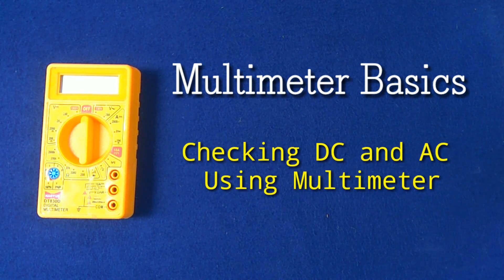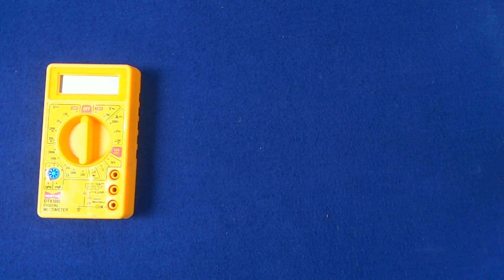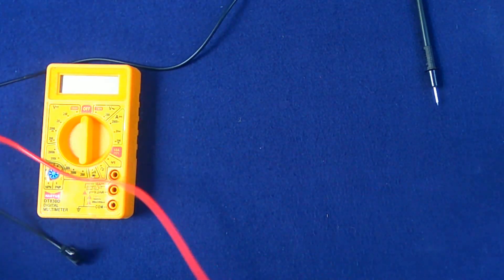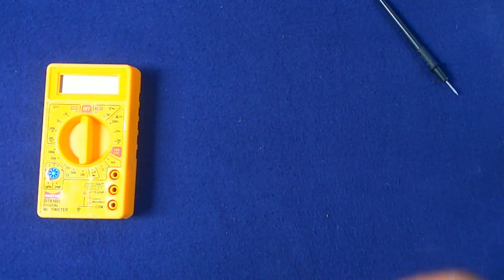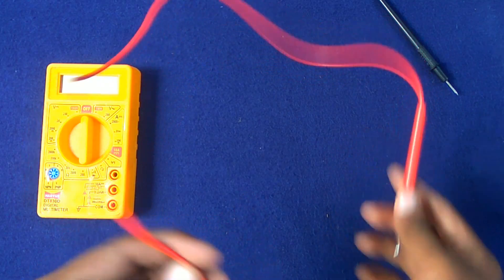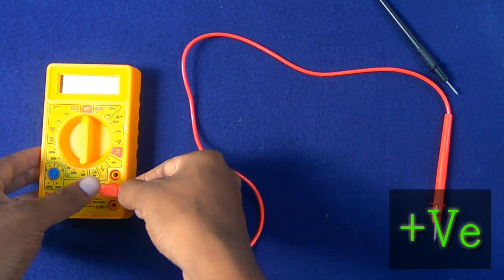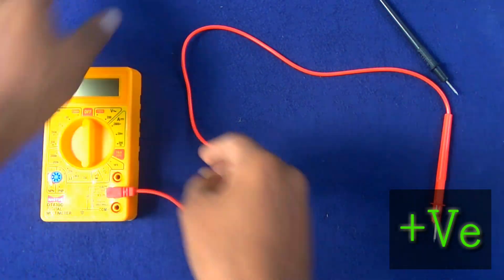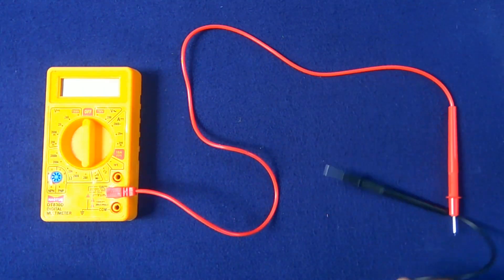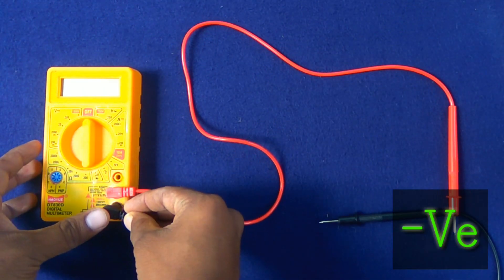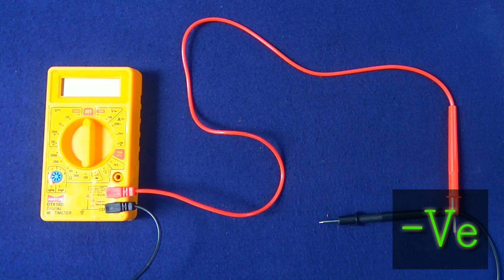Checking AC and DC using a multimeter. These are known as cords. The red one is the positive cord which we put in the center, and the black one is the negative cord which we put below the red.